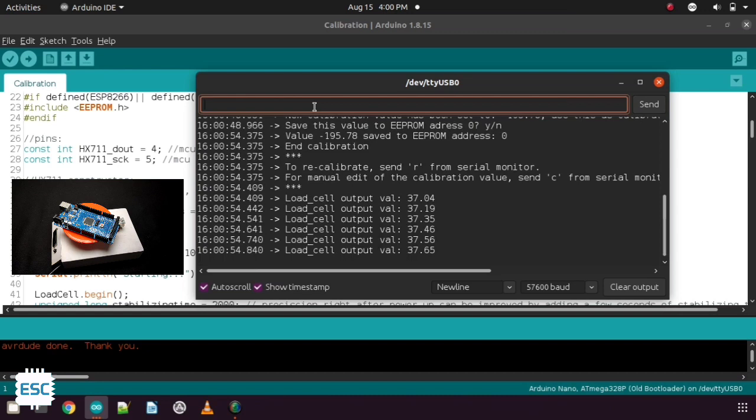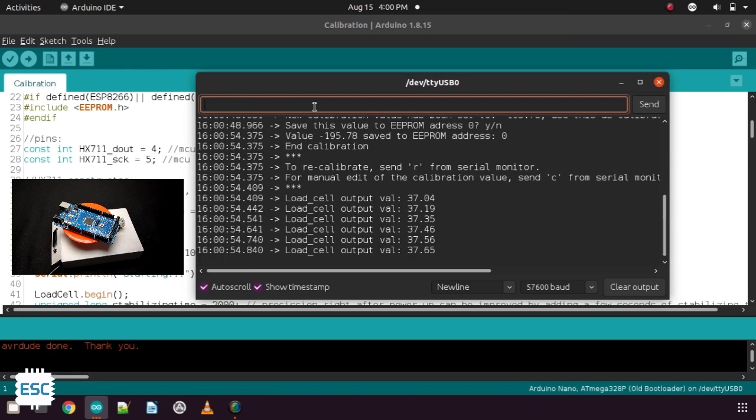Now type Y and send to save this calibrated value in EEPROM. After that you can see the weight.